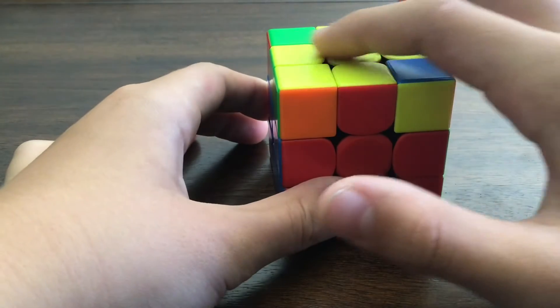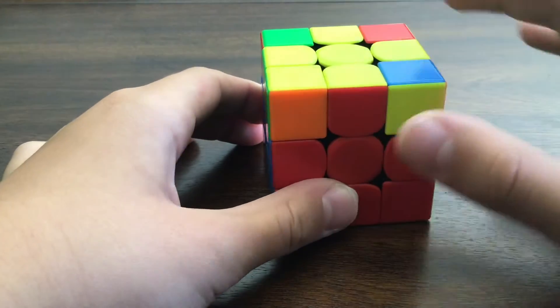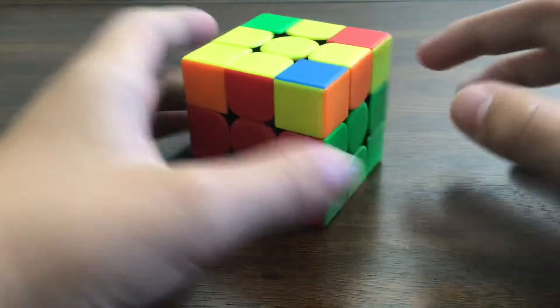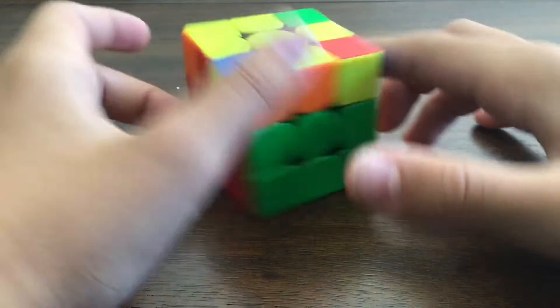For the first one, you're going to have the block on the bottom left corner, and the yellow piece in the front, here, and here.